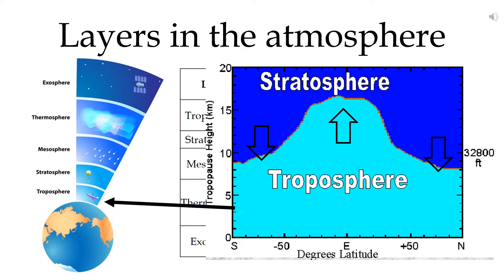It goes up to between about 9km and 17km above the Earth's surface. The height of the troposphere varies considerably. This is because warm air rises and cool air sinks.